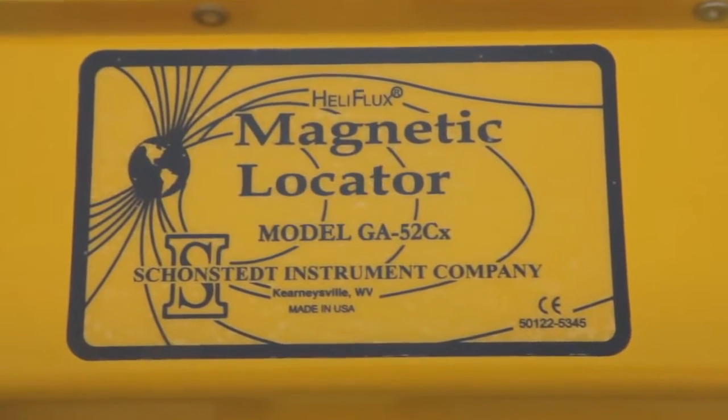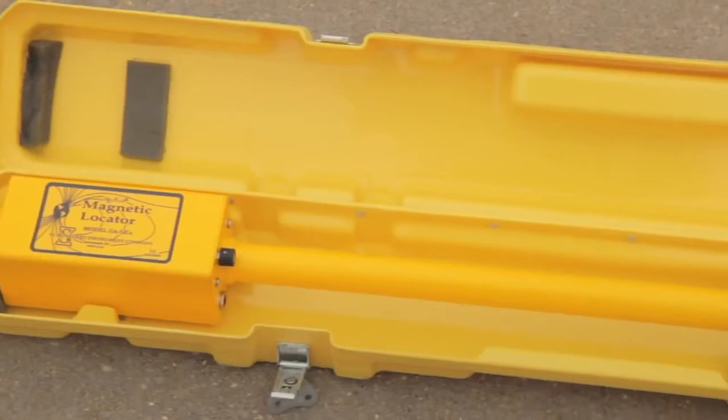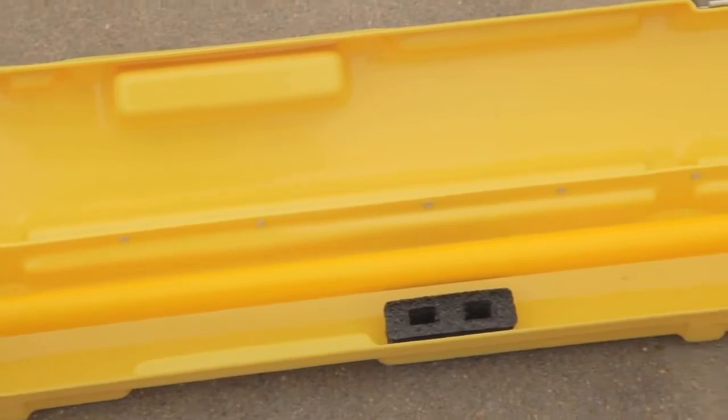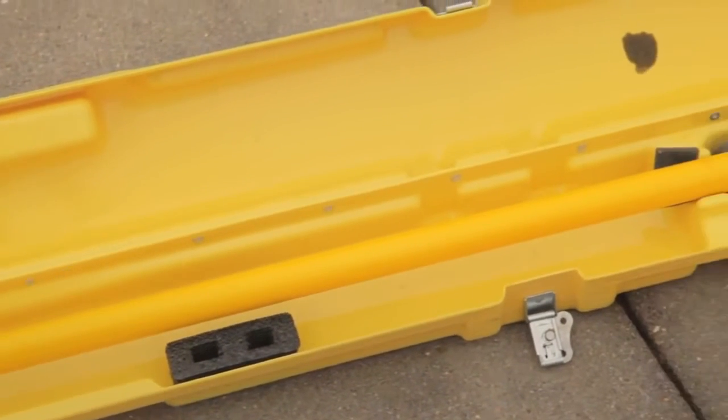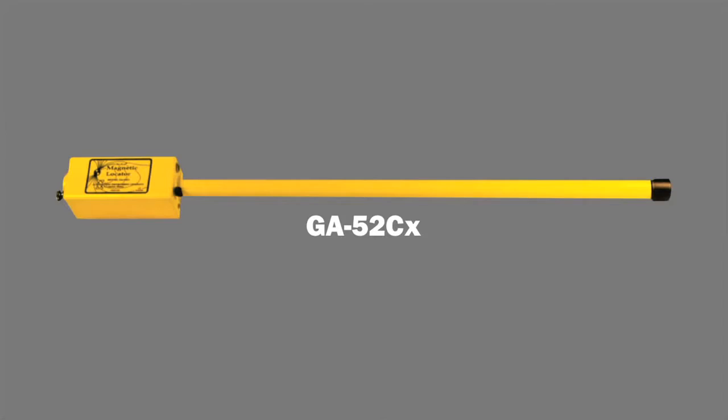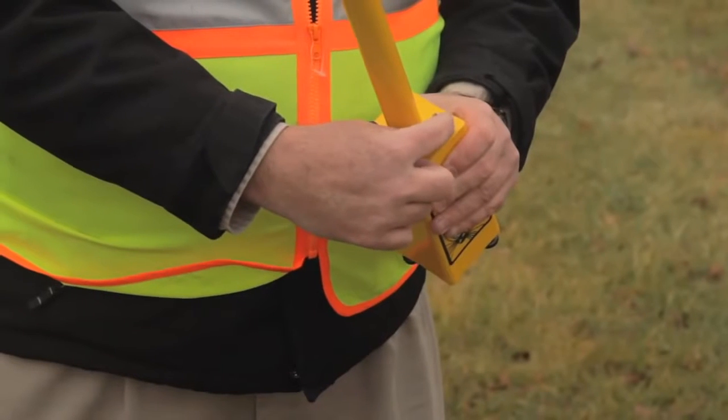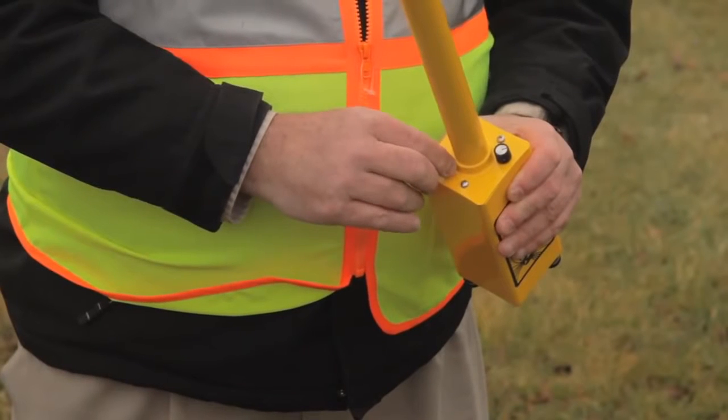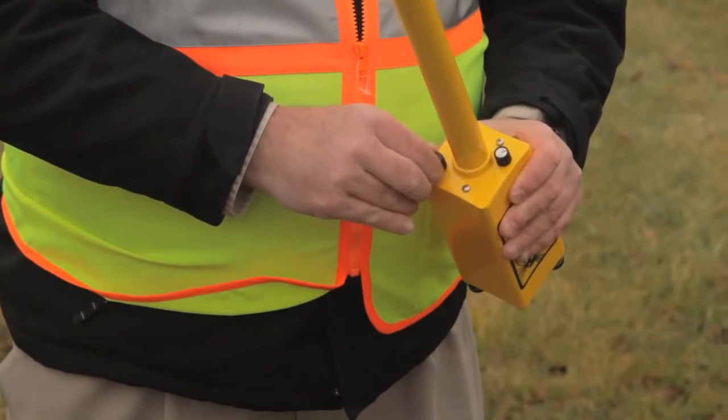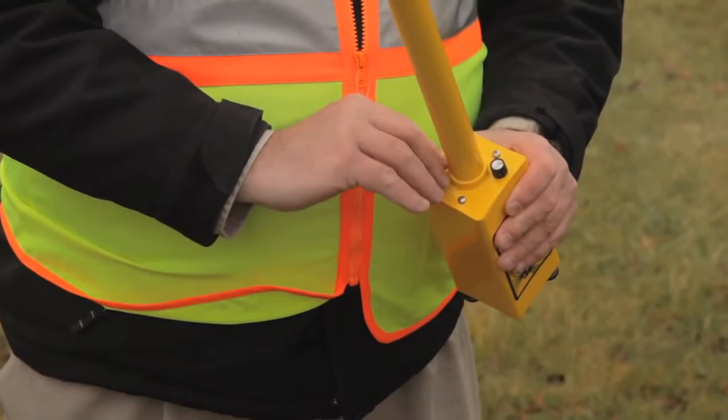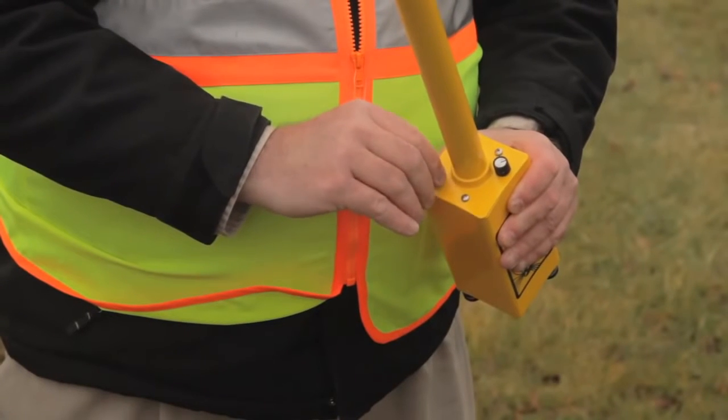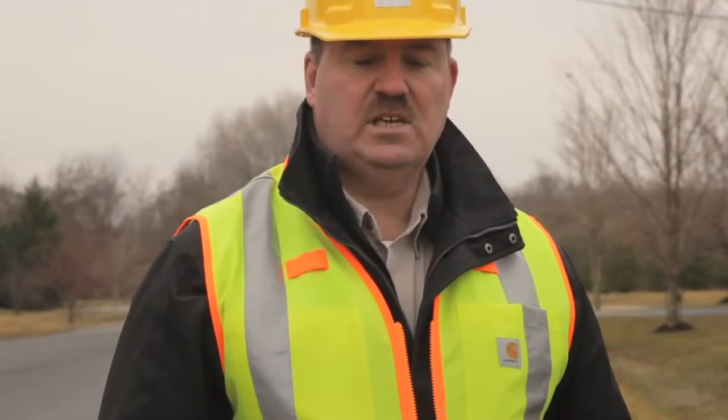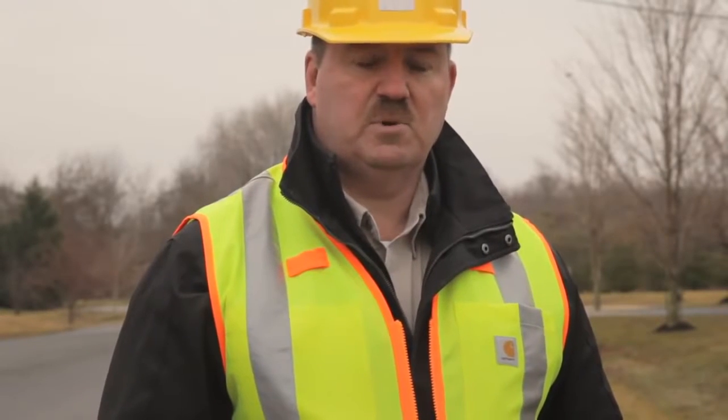The 52CX has the longest tube and what that represents is the sensor separation within this tube has the furthest separation, allowing for this product to have the most sensitivity to find deeper targets and also very small ferrous targets. This is the volume knob on the GA52CX and this is the sensitivity switch. As you increase the sensitivity, you can see deeper targets from farther away. For the GA52CX, it has a five position sensitivity switch.